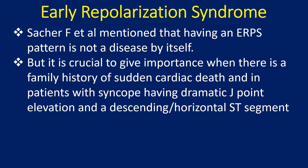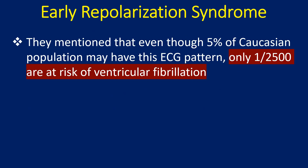Sacher and colleagues mentioned that having an ERP pattern is not a disease by itself. But it is crucial to give importance when there is a family history of sudden cardiac death, and in patients with syncope having dramatic J point elevation and a descending or horizontal ST segment. They mentioned that even though 5% of the Caucasian population may have this ECG pattern, only 1 in 2500 are at risk of ventricular fibrillation.